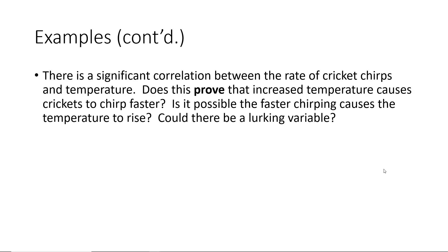In the third example, there is a significant correlation between the rate of cricket chirps and temperature. Does this prove that increased temperature causes crickets to chirp faster? No, it doesn't necessarily prove it — correlation is not the same as causation, though we do strongly suspect that increased temperature is why crickets chirp faster. Is it possible that faster chirping causes the temperature to rise? That is foolish — chirping faster has no effect on temperature. There could be a lurking variable, such as mating season or other unknown factors. An experiment would be needed to show that temperature is the key variable causing the increase in cricket chirps.